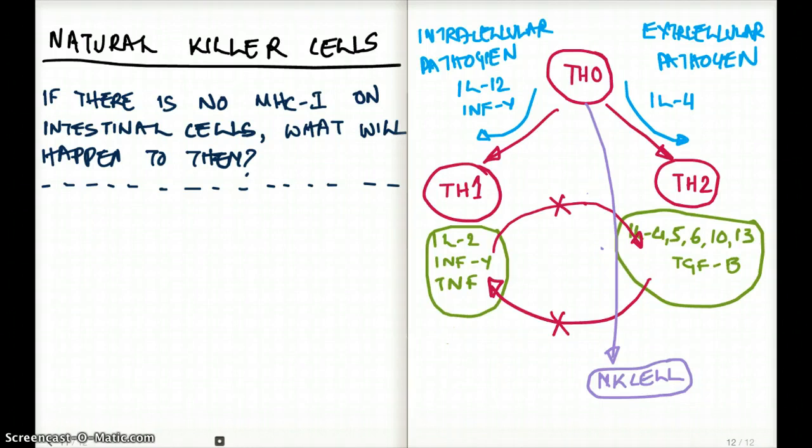Now we know that MHC class 1 binds to T cell receptor and as a result the cytotoxic T cells are able to kill those MHC class 1 bound molecules because we recognize that there is some sort of pathogen inside that cell. But if we have no MHC class 1, then how can T helper cell bind? Cytotoxic T cells bind? In those situations we need natural killer cells.